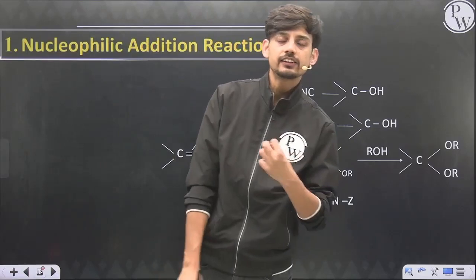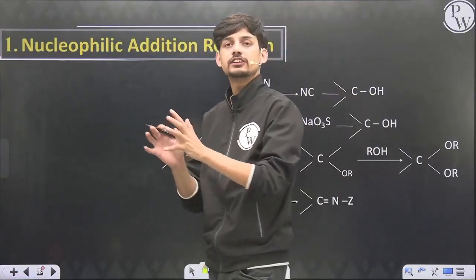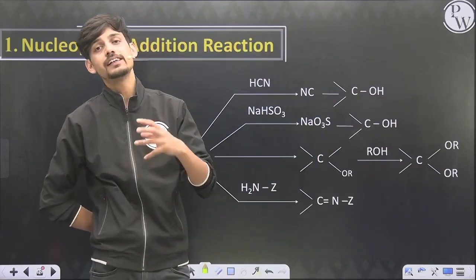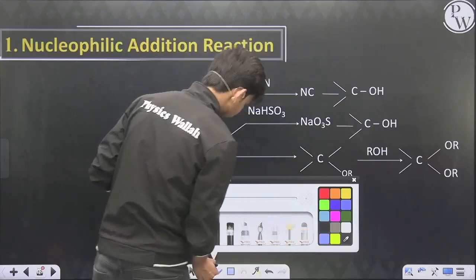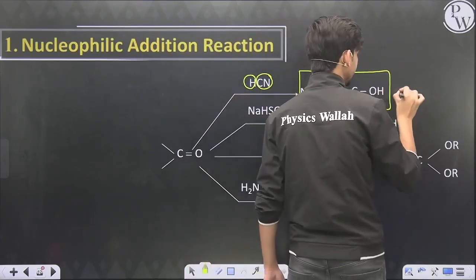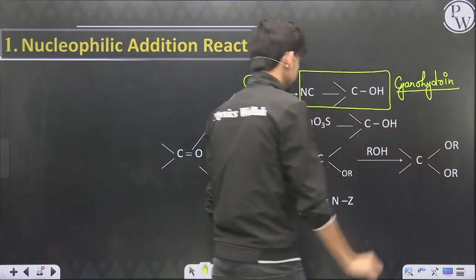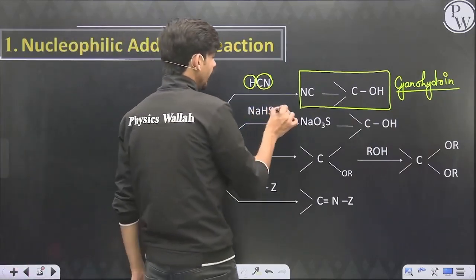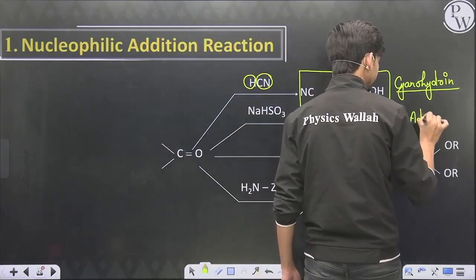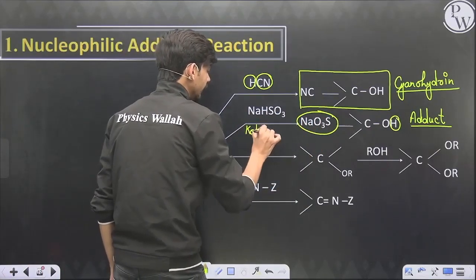We can add HCN, NaHSO3, alcohols, ammonia derivatives, and many more reagents; most reactions in this chapter belong to nucleophilic addition. When we add HCN, H is the electrophile and cyanide is the nucleophile. We get an alpha hydroxy cyanide, which is known as cyanohydrin, because it has both a cyanide group and a hydroxide group. Adding sodium hydrogen sulfite gives an adduct — H is added to oxygen and –SO3Na is added to carbon — which forms a precipitate. Since the nucleophile is quite bulky, most ketones do not give this reaction.